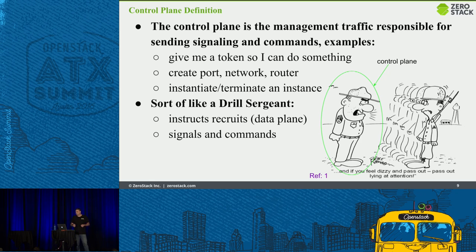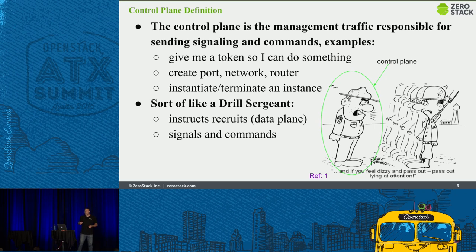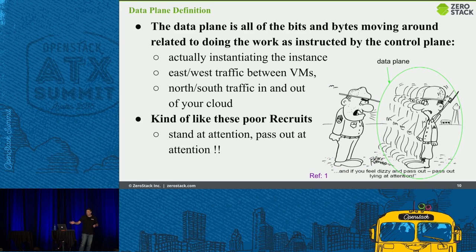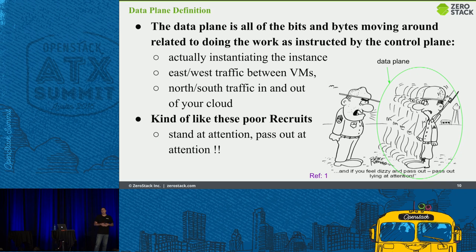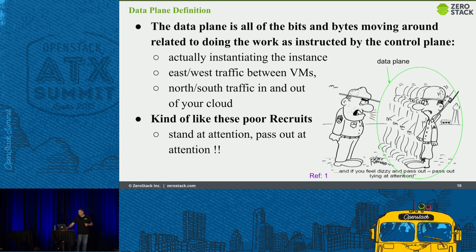Those are all commands and signals initiated by the control plane. The actual doing is the data plane — these poor recruits. The data plane is your east-west traffic, the actual instantiation of instances, taking the Glance image and building a VM, all the heavy lifting work including network conversations east-west, north-south, in and out of your environment.